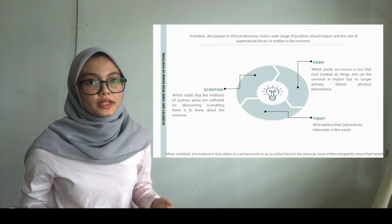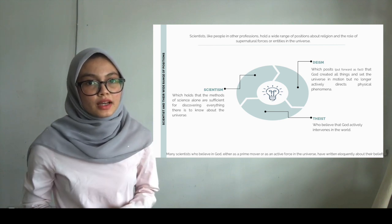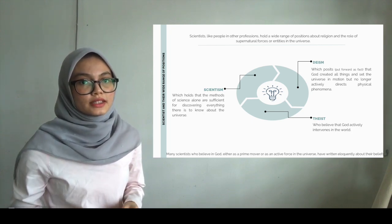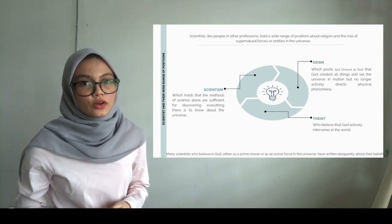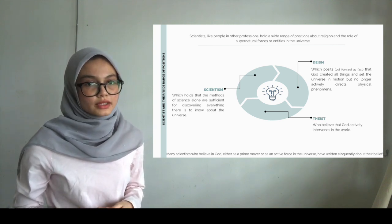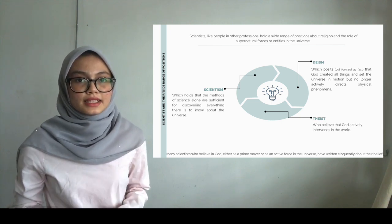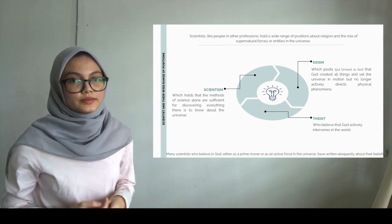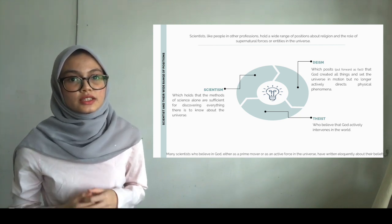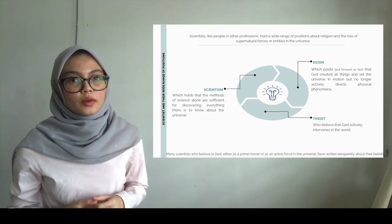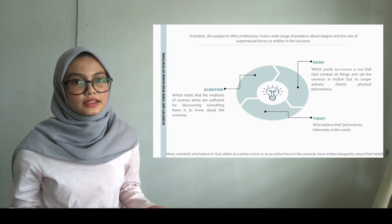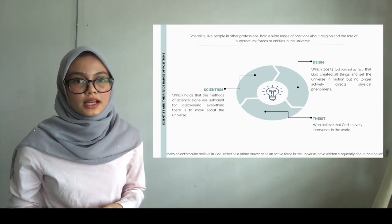I will explain about scientists and their wide range of positions. Scientists, like people in other professions, hold a wide range of positions about religion and the role of supernatural forces or entities in the universe. First is Deism, which posits that God created all things and set the universe in motion but no longer actively directs physical phenomena. Second is Theism, who believe that God actively intervenes in the world. And lastly is Scientism, which holds that the methods of science alone are sufficient for discovering everything there is to know about the universe.